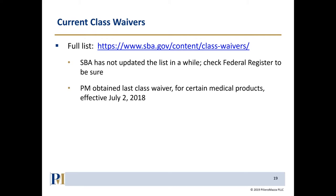If there are no small businesses that ever enter the market, class waivers can stay in place indefinitely. If it's cumbersome to get contracting officers to submit individual waiver requests for every contract, and you're a reseller of products that no small businesses make, it might be to your advantage to put together a class waiver request to SBA. It'll take some time to process, but when issued, you won't have to worry about individual waivers anymore — you'll be able to resell products of a large business on set-aside projects.